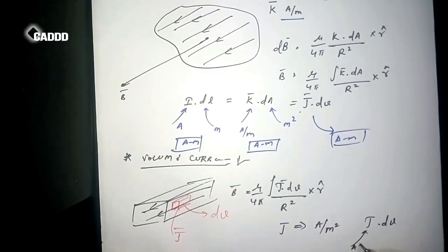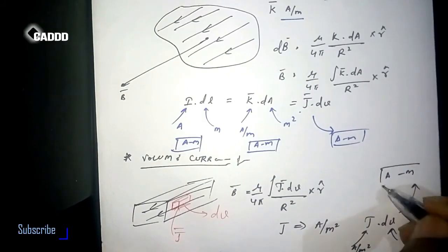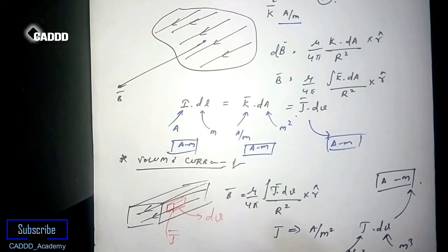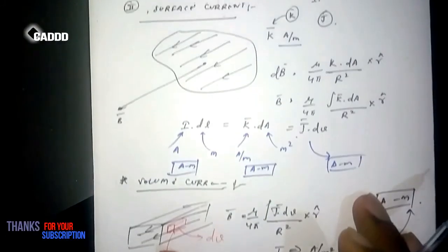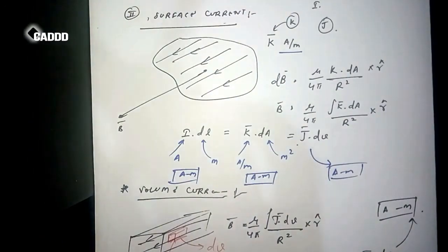So J·dV will be, unit of this thing is ampere per meter square, and unit of this thing is meter cube, so then we will have ampere meter. So this comparison is just to remember the line current, surface current, and volume current formulas.